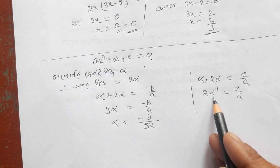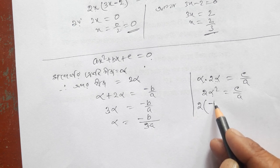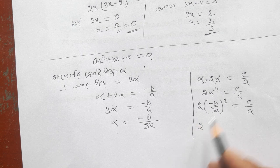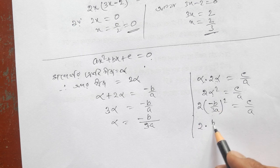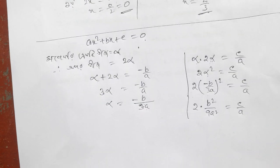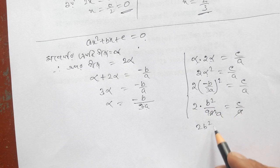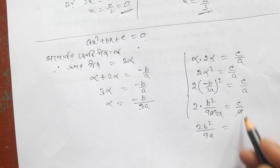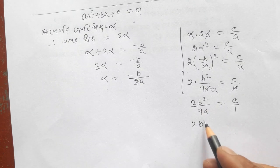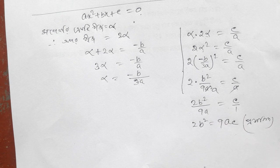Alpha value is minus b by 3a. 2 alpha is minus b by 3a. 1 whole squared equals c by a. 2 minus b squared, minus b by a whole squared, plus b squared. 3a whole squared is 9a squared, c by a. So 2b squared equals 9ac. 2b squared. 9a. So 2b squared equals c, giving us b squared equals 9ac.